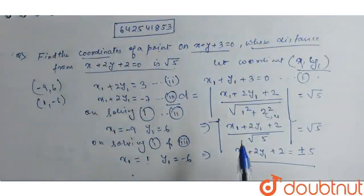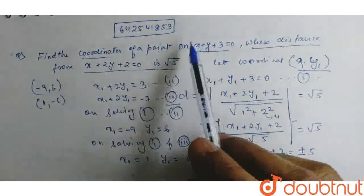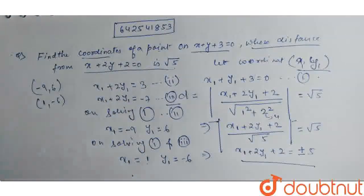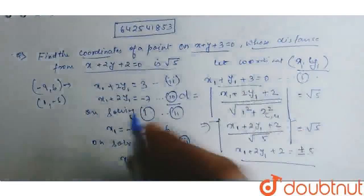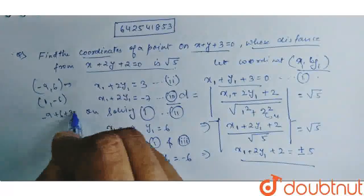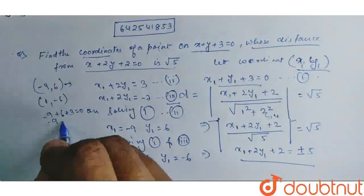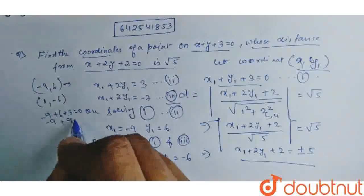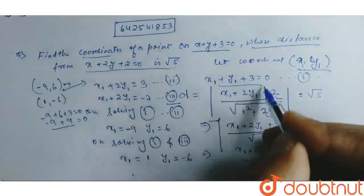But we know that perpendicular distance between point and line is only one coordinate. So, when we put this on this line, we get minus 9 plus 6 plus 3 equal to 0. So, this point satisfies this equation.